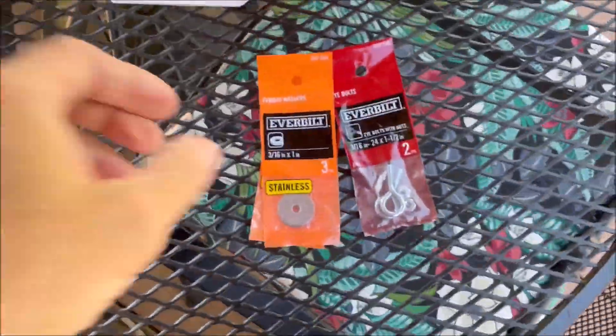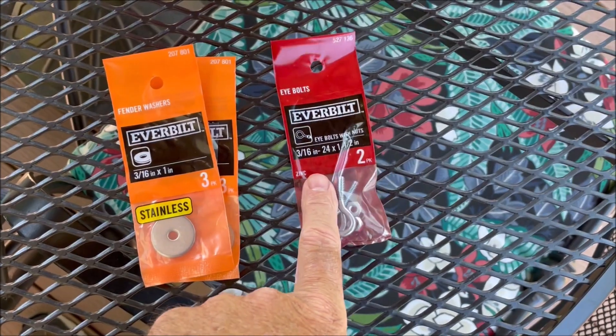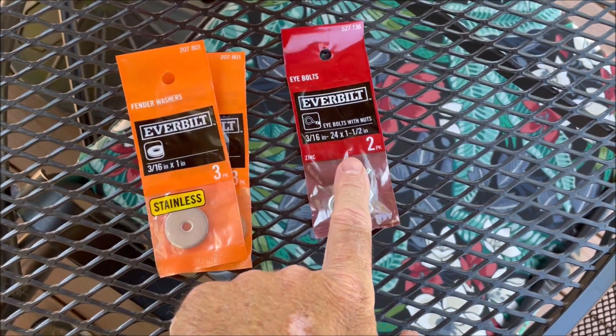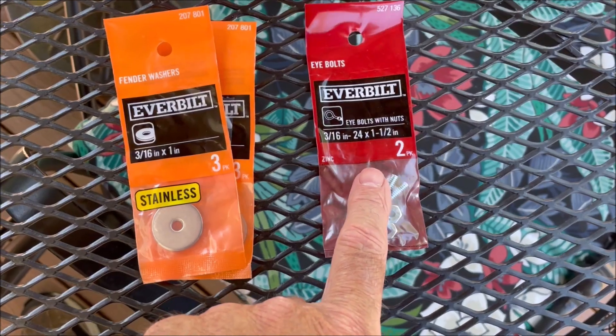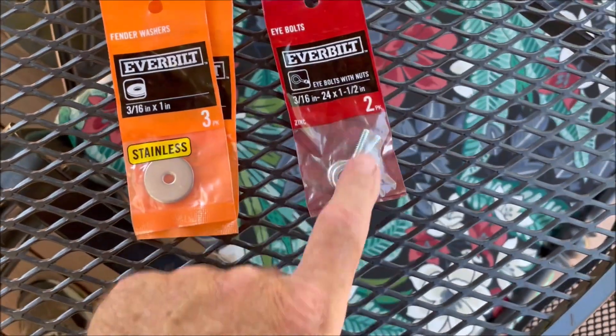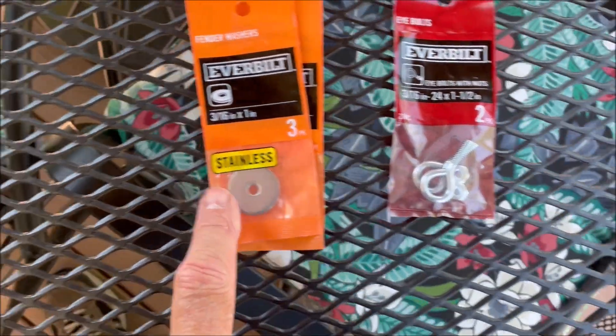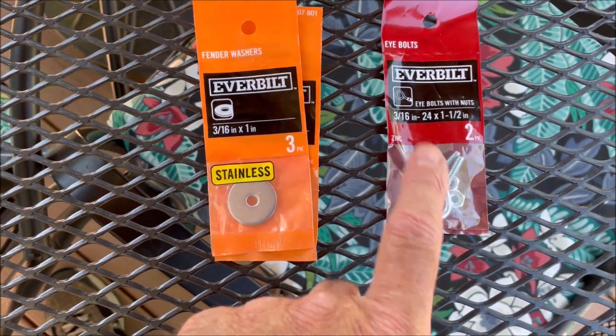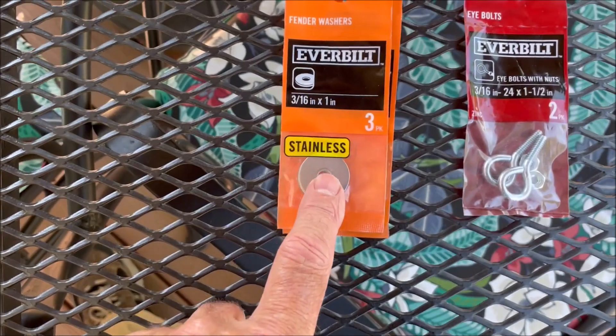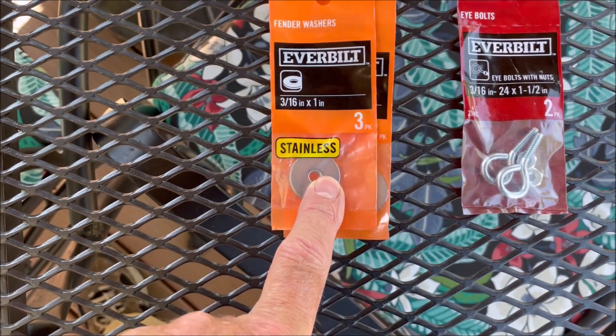So what we're going to do is start out. We need some of these 3/16 by 24 washers. Got all this stuff from Home Depot, these eyelets with nuts. And then we need six of these, six eyelets, so two in each pack. Then we need 12 washers to go with those.